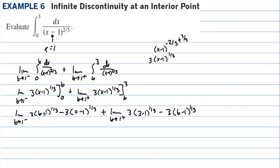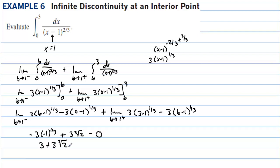When we plug in, the b terms go to 0. We have negative 3 times (negative 1) to the 1 third, plus 3 times the cube root of 2 when we take 3 minus 1, minus 0. That gives us 3 plus 3 times the cube root of 2.